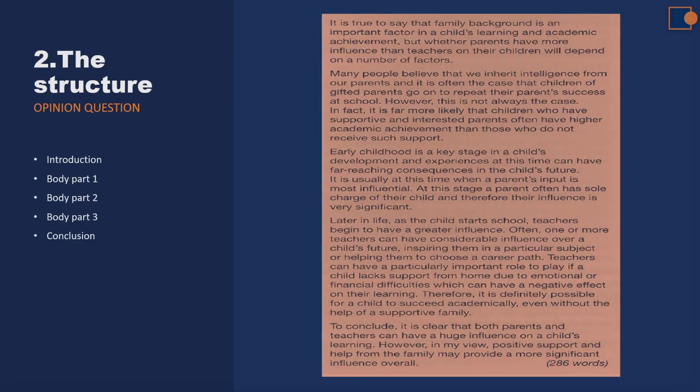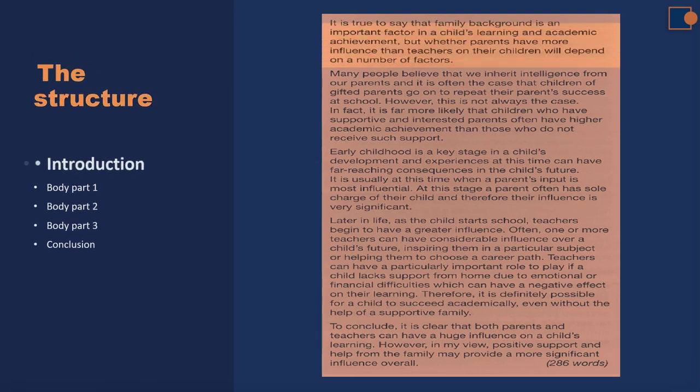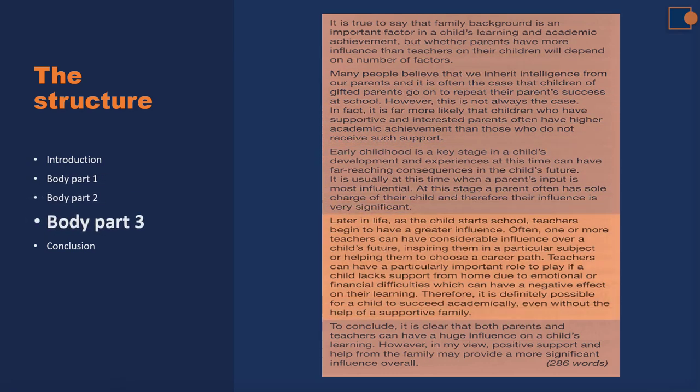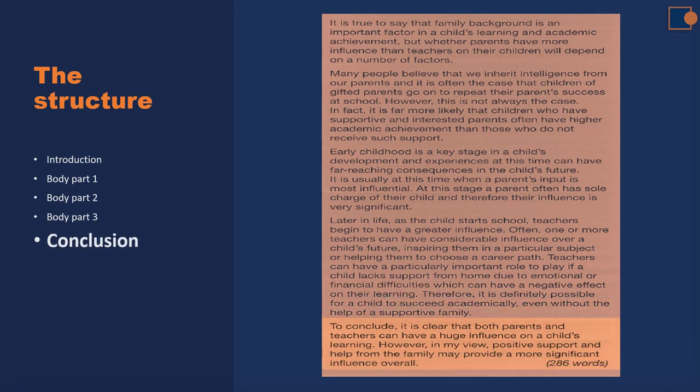The structure is basically the same for any type of task 2 question. You're going to need an introduction, body part 1, part 2, part 3, and finally a conclusion. This is not a golden rule — you can use your own version, for example just two body paragraphs. But the recommended version I prefer is three body paragraphs, because it is safe and gives you the highest chance of writing more than 250 words.